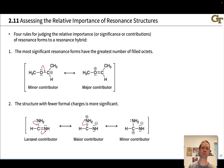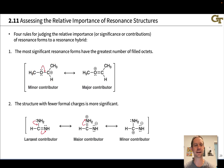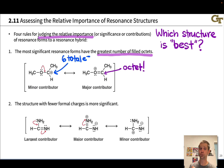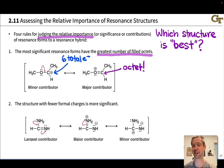The number one rule is that the most significant resonance forms have the greatest number of filled octets — they satisfy the octet rule best. In the example shown, we have a first resonance form with a positively charged carbon adjacent to an oxygen with a lone pair — a C+ next to a lone pair structural pattern. We can generate a resonance form with a C-O pi bond and positive charge on oxygen. The major contributor has an octet on every atom, while the minor contributor has carbon with an electron deficiency. This tells us there's significant double bond character between carbon and oxygen.